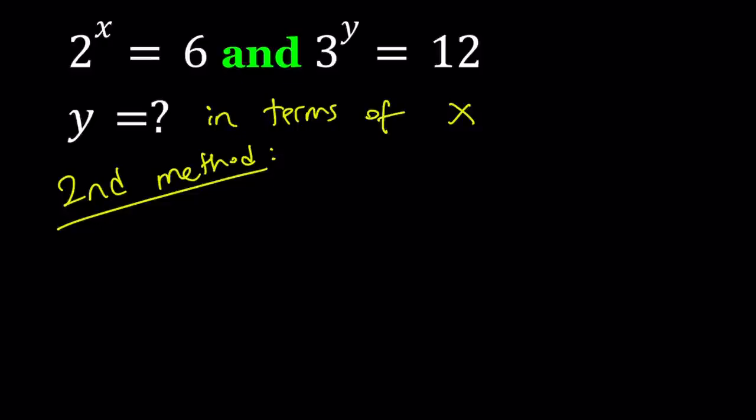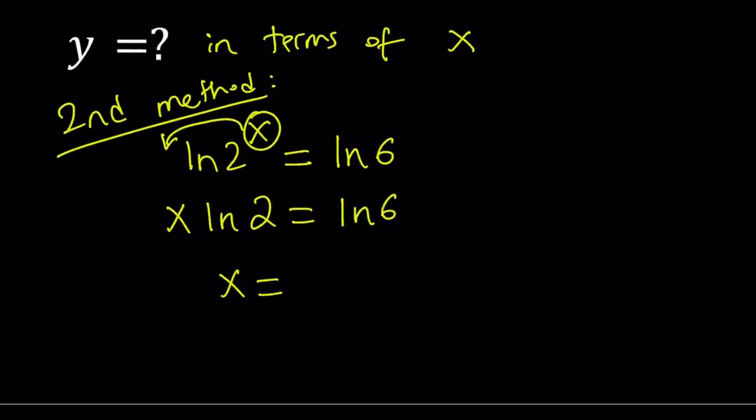Now, my second method involves the following. I'm going to ln both sides in the first equation. So ln 2 to the power x equals ln 6. And I'm going to bring down the x here. We have a rule for logarithms. x times ln 2 equals ln 6. And from here, I can write x as ln 6 over ln 2.